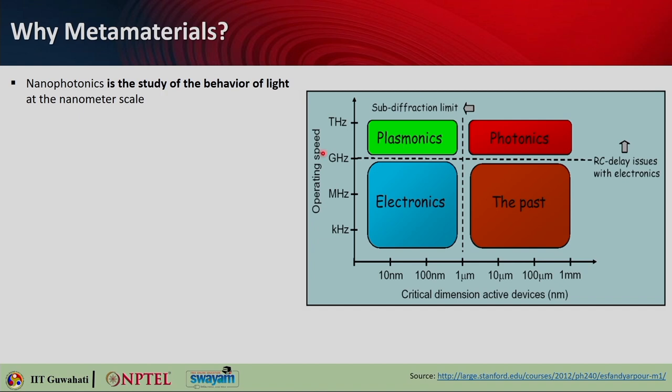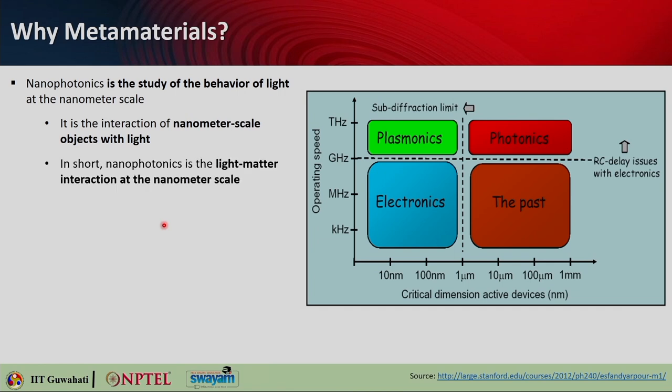Plasmonics is a branch of nanophotonics. Nanophotonics is basically the study of the behavior of light at the nanometer scale — the interaction of nanoscale objects with light. In short, nanophotonics is light-matter interaction at the nanoscale.